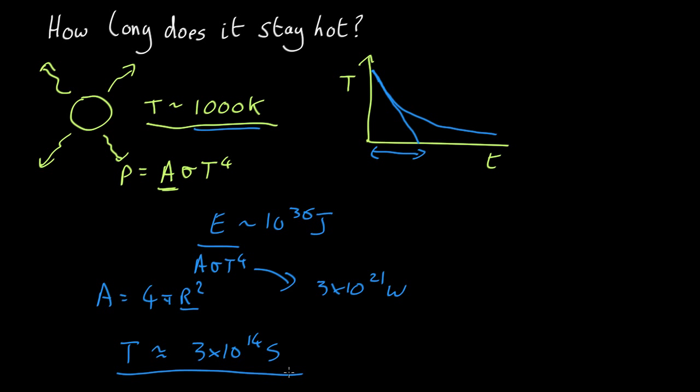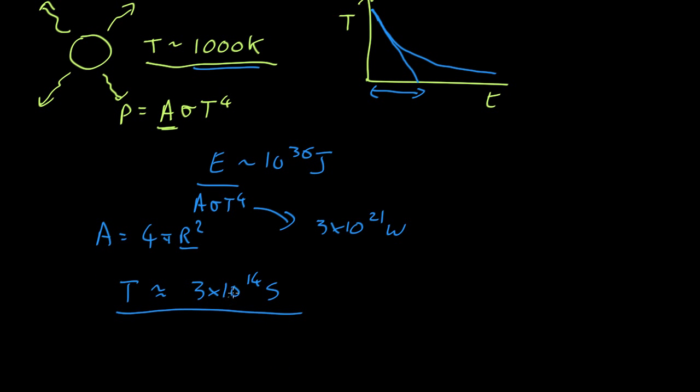Once again, a meaninglessly big number. But we can convert that into something that makes more sense, like years. So divide by 60 to get from seconds to minutes, divide by another 60 to get to hours, divide by 24 to get to days, divide by 365 to get to years. And that comes out as about 10 million years.